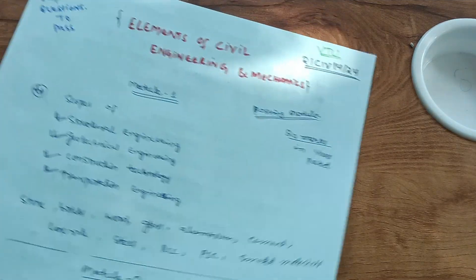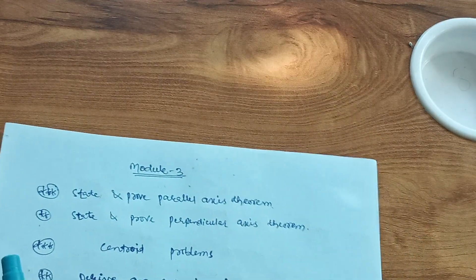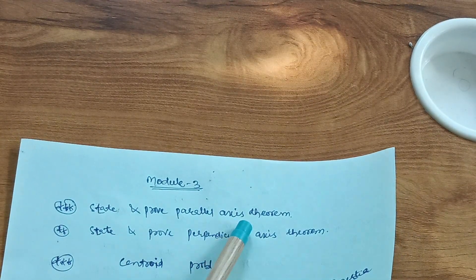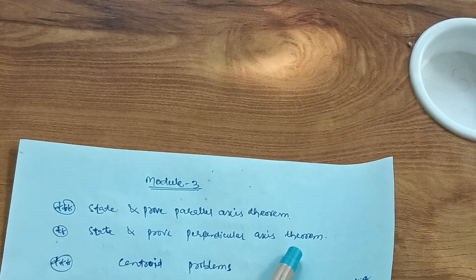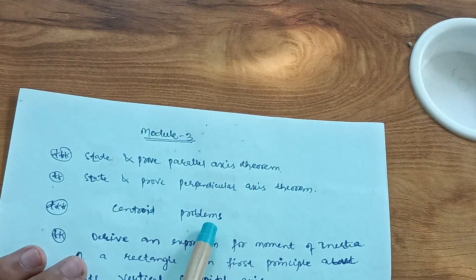Next part is module third. In module three, state and prove parallel axis theorem, state and prove perpendicular axis theorem. This is the important part.